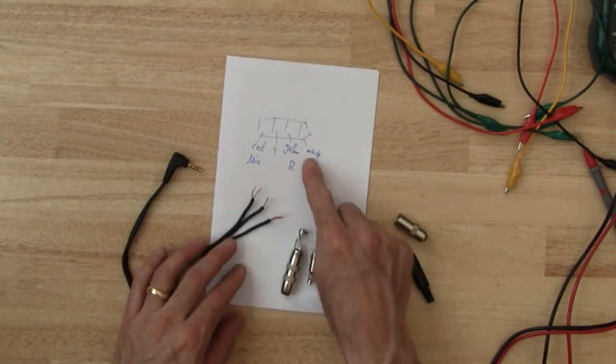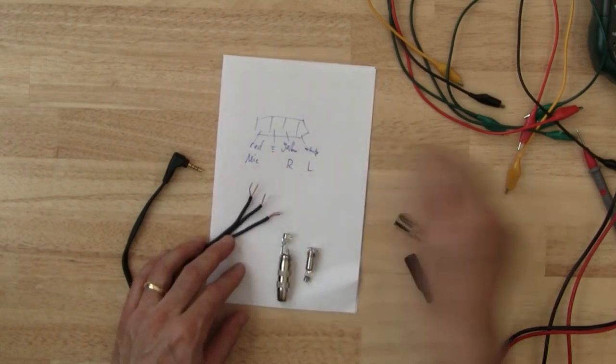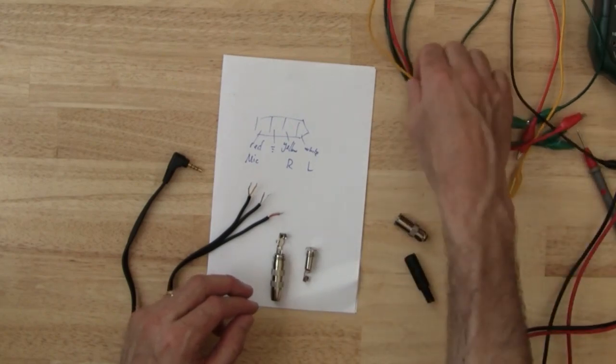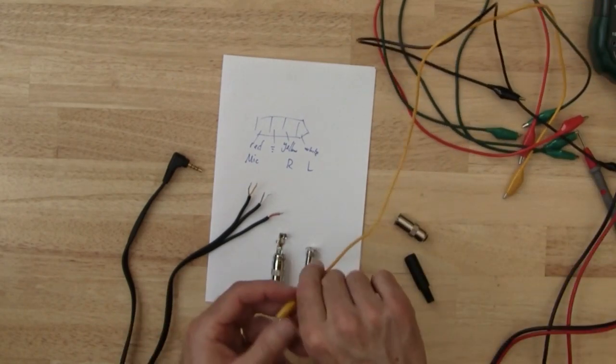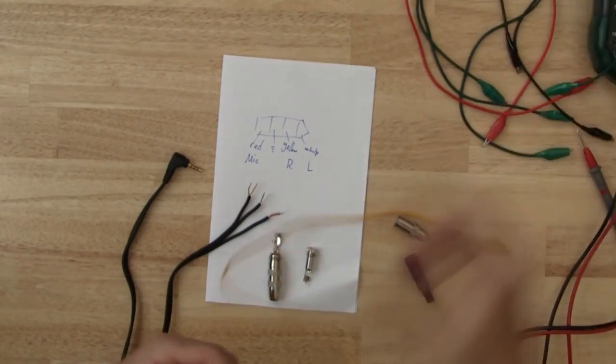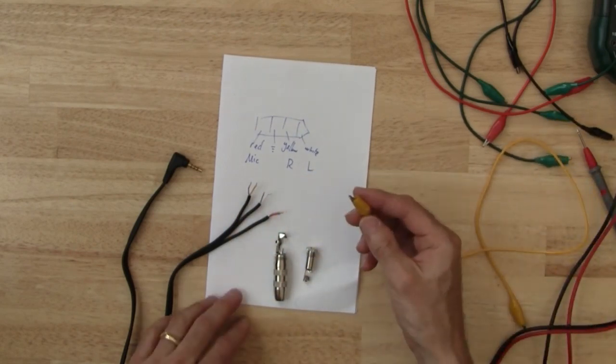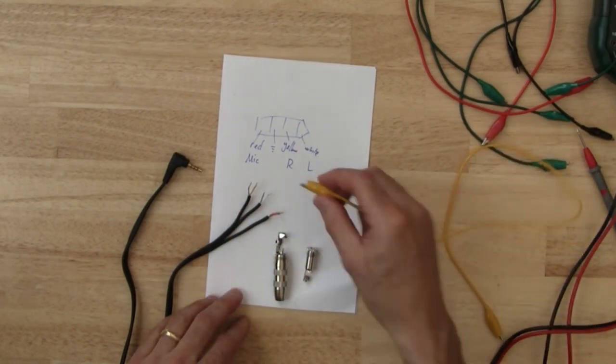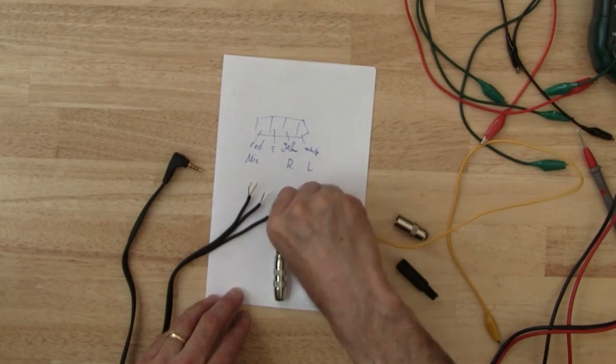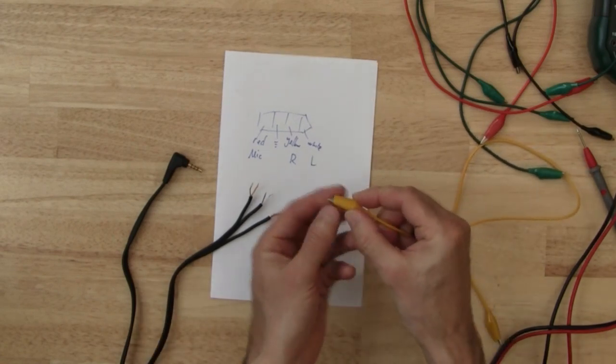And basically what we want to do is hook up with alligator leads each wire to the corresponding lug on the jacks. So let's start with the headphone jack left right and ground. I'm going to go ahead and use the same color alligator leads as the wires but if you don't have them it doesn't really matter.